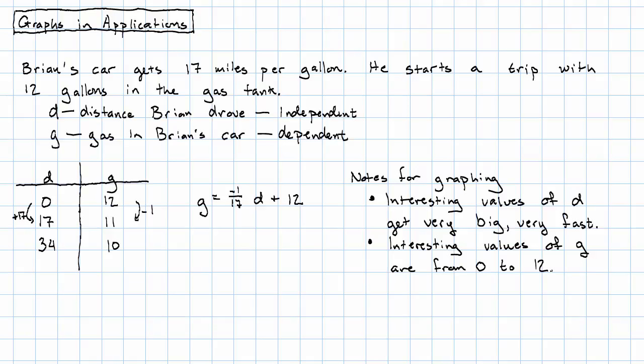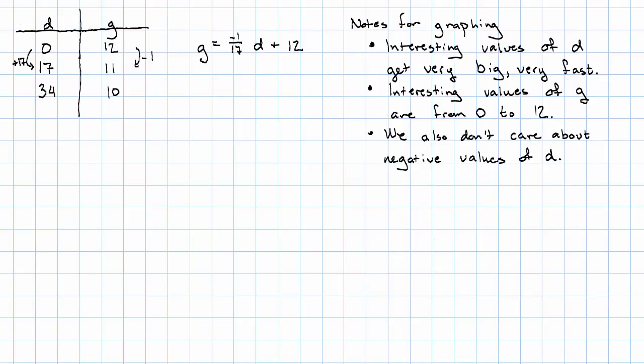And in this problem, are we interested in negative values of D at all? No. We don't care about negative values of D either. So what does that tell us about our graph?